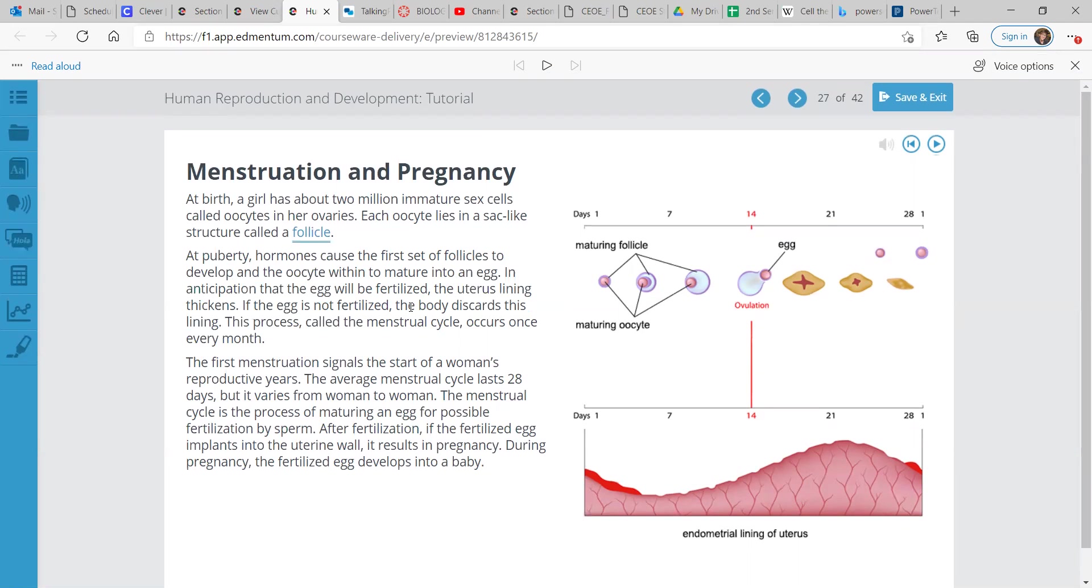In anticipation that the egg will be fertilized, the uterus lining thickens. If the egg is not fertilized, the body discards this lining. This process, called the menstrual cycle, occurs once every month. The first menstruation signals the start of a woman's reproductive years. The average cycle lasts 28 days, but it varies from woman to woman. The menstrual cycle is the process of maturing an egg for possible fertilization by sperm. After fertilization, if the fertilized egg implants into the uterine wall, it results in pregnancy. During pregnancy, the fertilized egg develops into a baby.